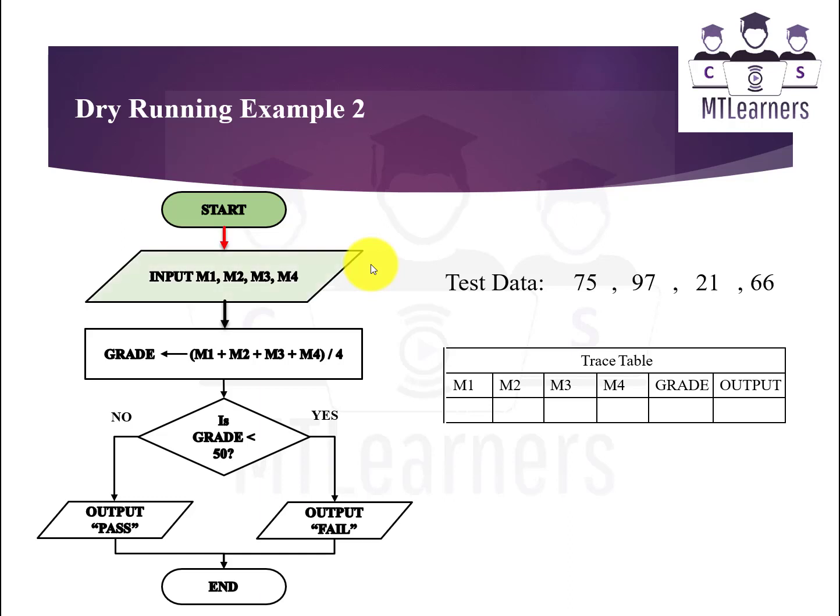Starting, then input values M1, M2, M3, and M4. In the sequence, data 75, 97, 21, and 66, you will place all these values in the table under their represented columns. Next up is the calculation of grade. So sum up all the values and divide them by 4. You will get the grade value, that is 65.